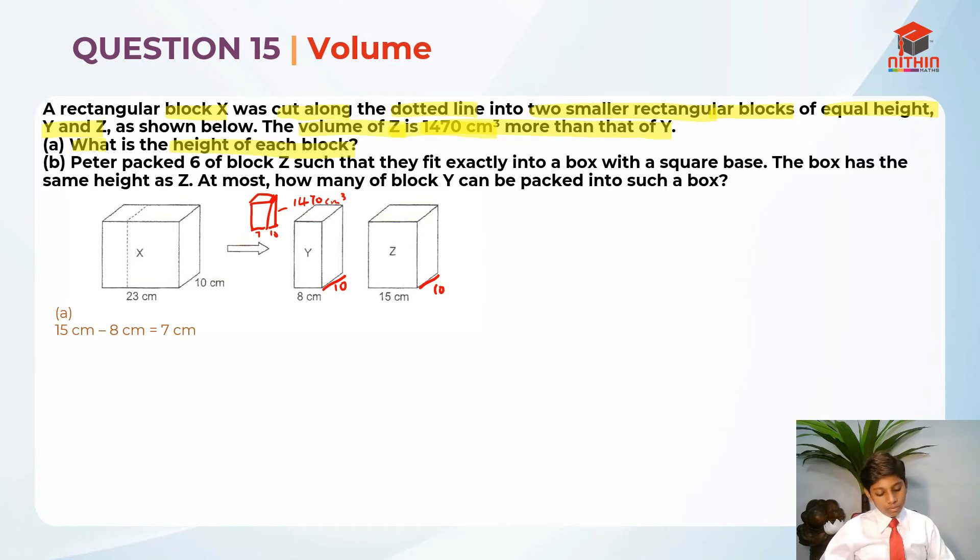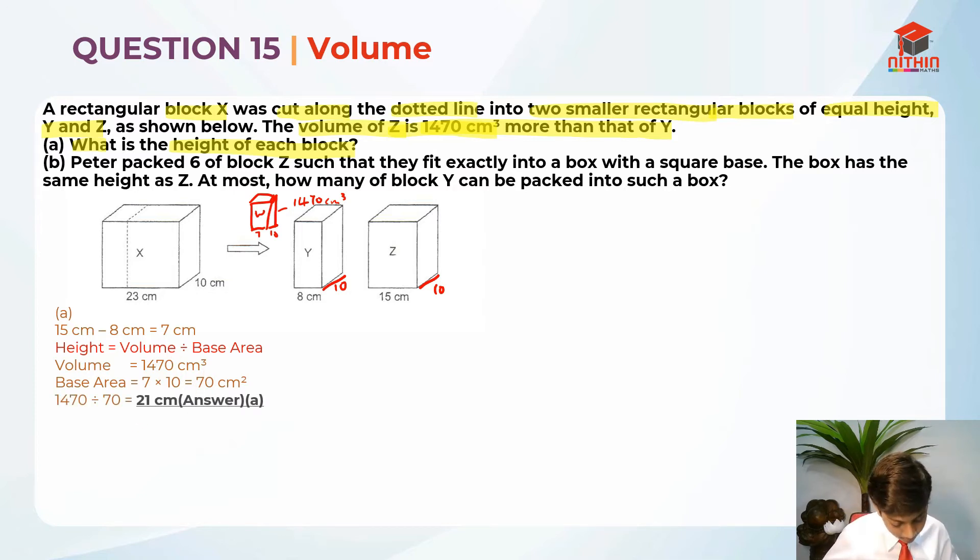So this is the 7 cm and 10 cm over here. So this is another block, which is, this volume is 1470 cm³. So before that, let me put W here. So now we need to use the concept height equals volume divided by base area. So the volume is 1470 cm³ and the base area is 7 times 10, which is 70 cm². So now we just basically divide those two, which will give us 21 cm. So 21 cm is the height.